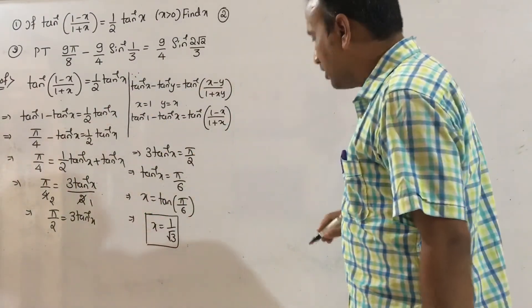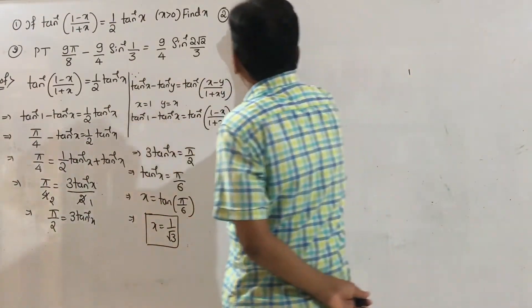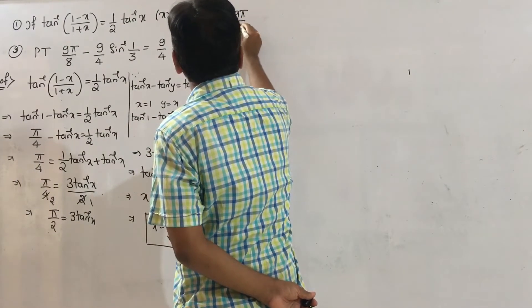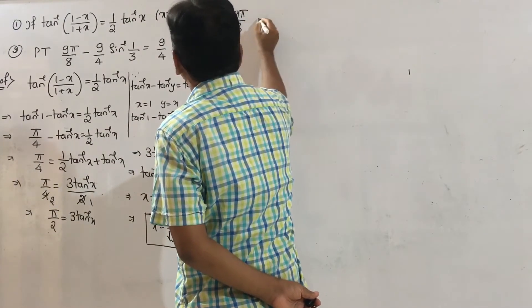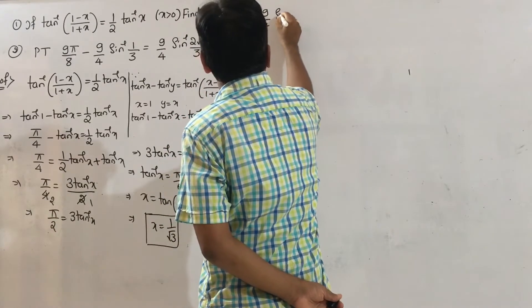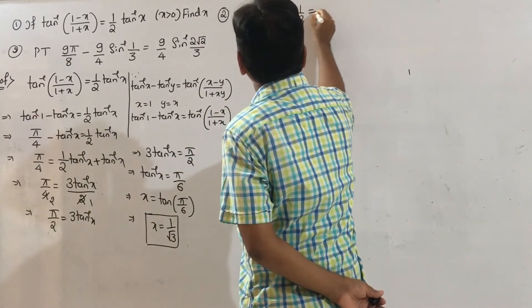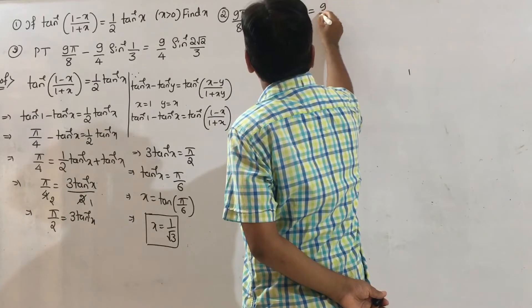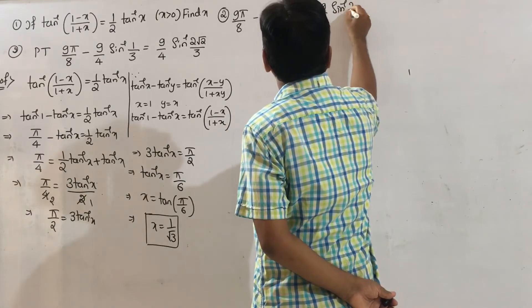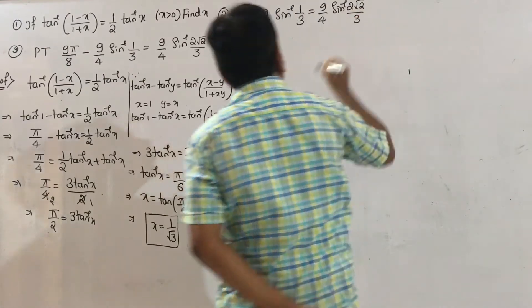Second one. Prove that: 9 pi by 8 minus 9 by 4 sin inverse (1 by 3) equals 9 by 4 sin inverse (2 root 2 by 3).